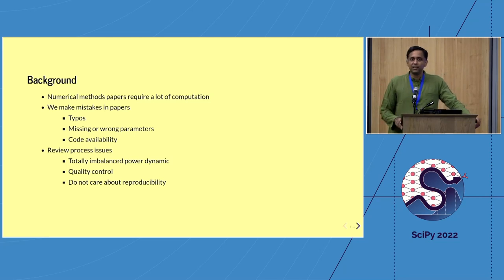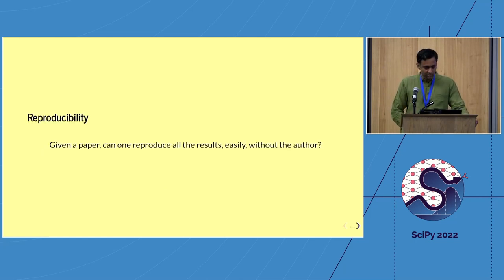So the background really is, if you look at numerical research, most numerical methods research papers will require a heck of a lot of computation. And the second major issue is that if you read a numerical research methods paper, we all make these mistakes. There are typos, right? You're trying to reproduce someone else's paper and the equation is actually wrong. Happens a lot. How many of you have seen missing parameters or actually wrong parameters in a paper? The other issue often you'll find is they don't even cite the software that they're using.